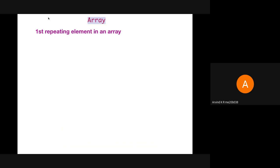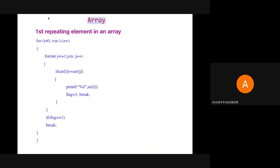Next is finding the first repeating element in an array using the concept of selection sort. The for loop construct is similar to selection sort. Inside the inner for loop, we check if arr[i] matches arr[j]. In that case, we print the value of arr[i], set flag to 1, and break. After the inner loop, if flag is 1, we break out of the outer loop as well. We use the flag variable for this purpose — to break the inner loop and then break out of the outer loop, so only the first repeating element is printed even if more elements are repeating.